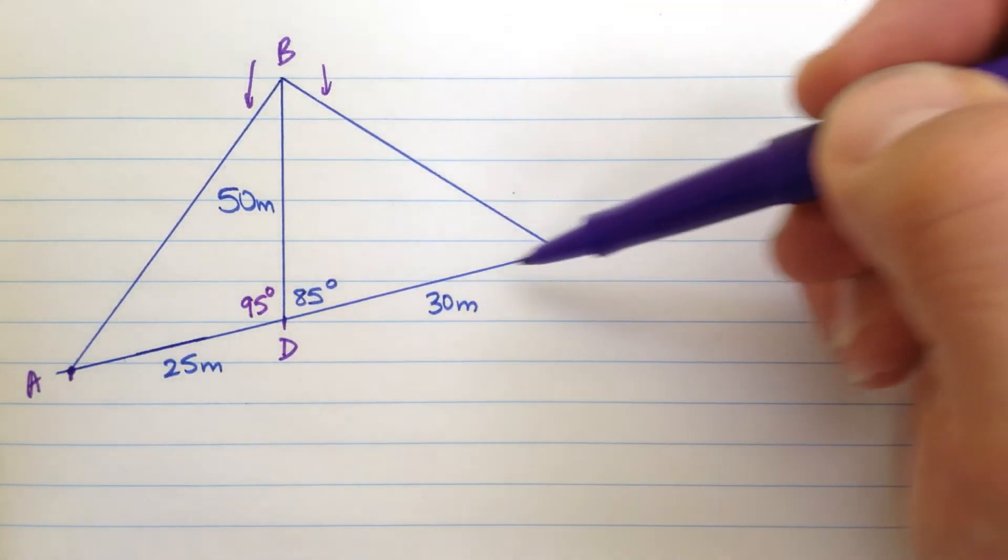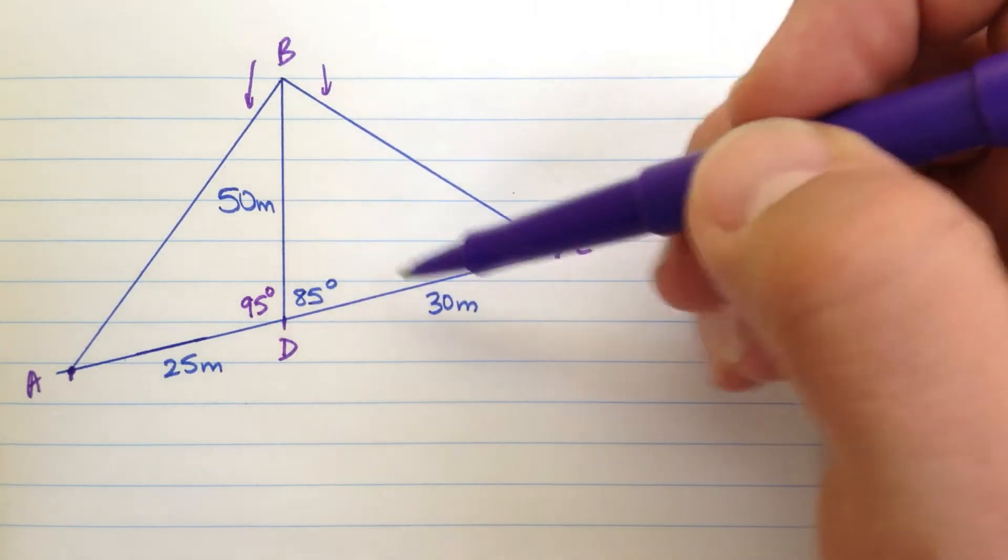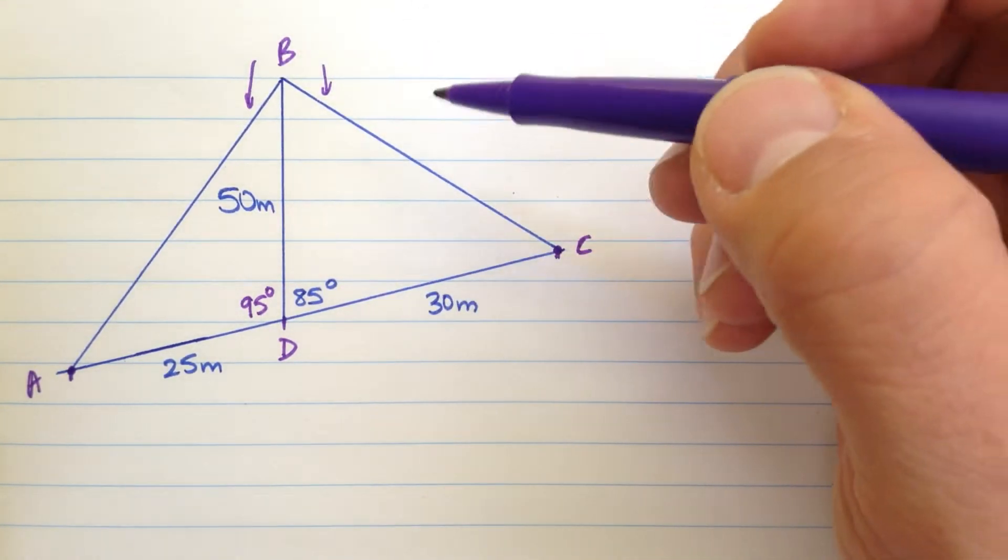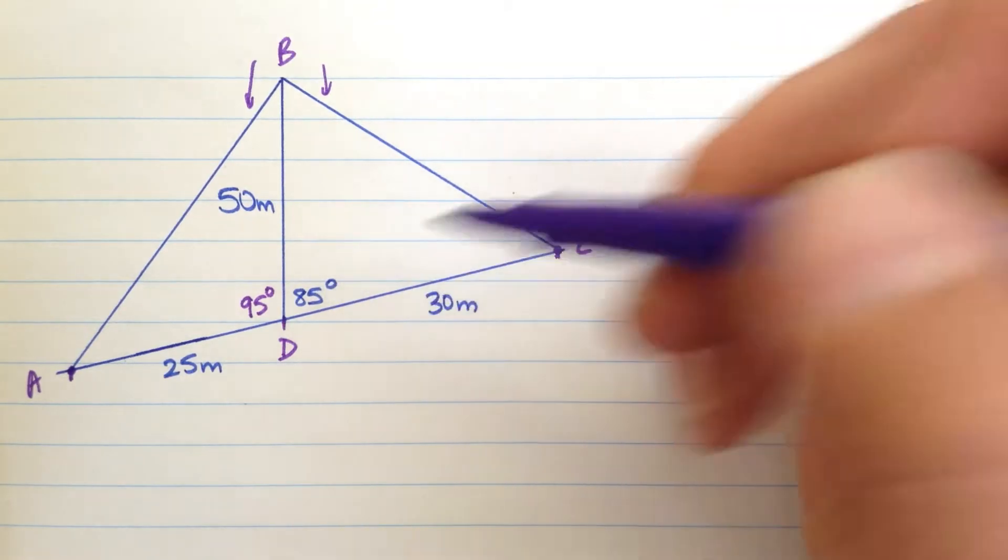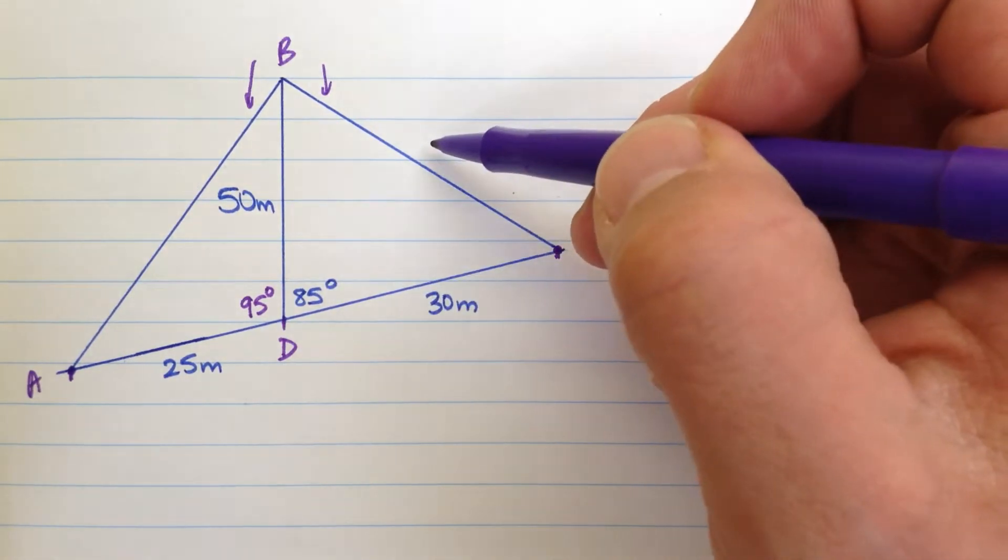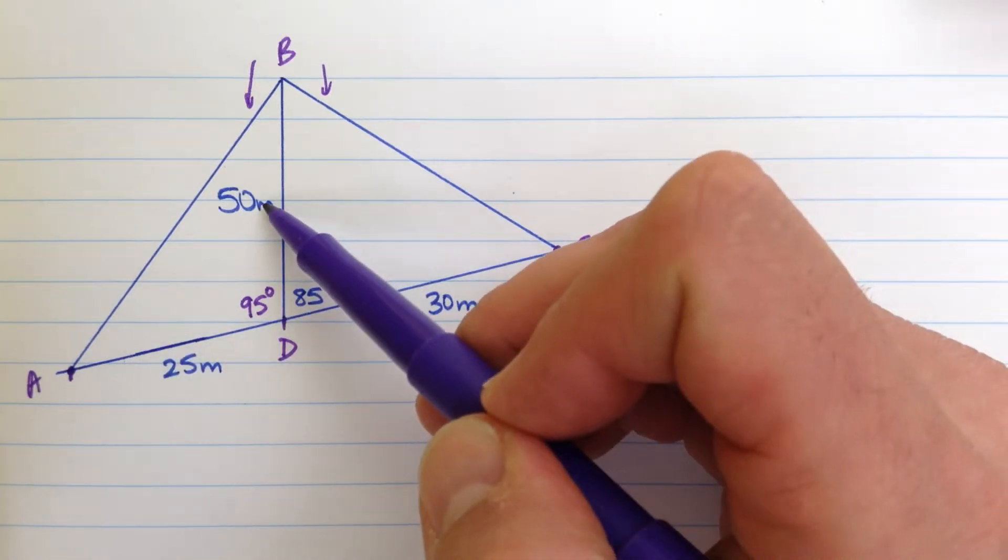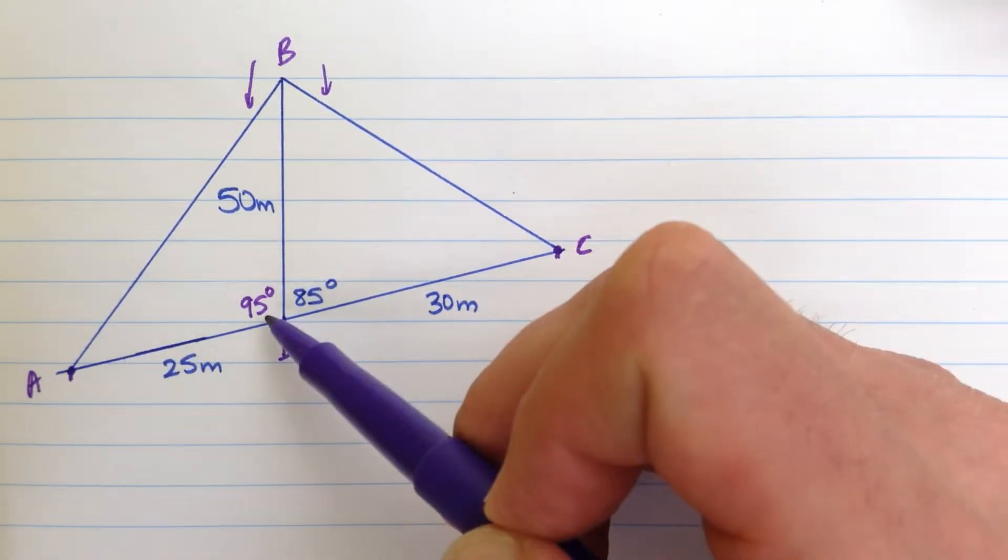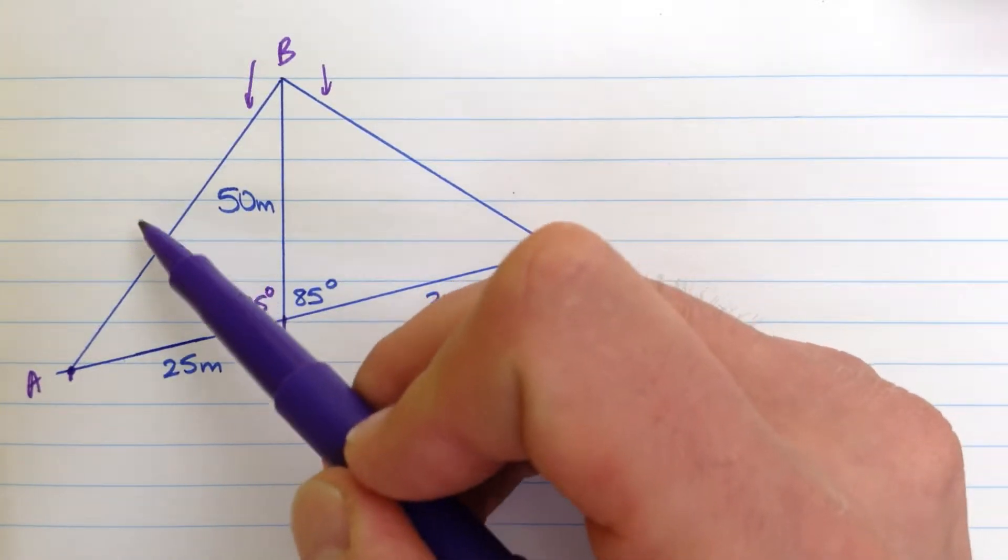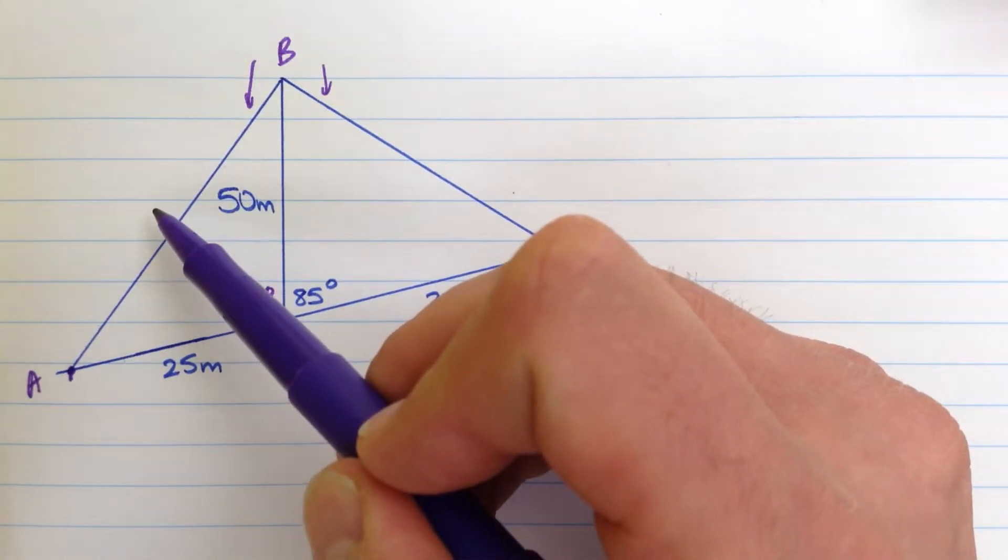So I know quite a bit about these two triangles now. I have a triangle here, BCD, which has two sides, 50 and 30, and an unknown side. And I know the angle over here. So I have this side, BC, that I don't know. On the other side here, I've got 50 meters and 25 meters. And I know the angle between, 95. And again, I'm trying to find the opposite side over here, length AB. I don't know any of these other angles here.